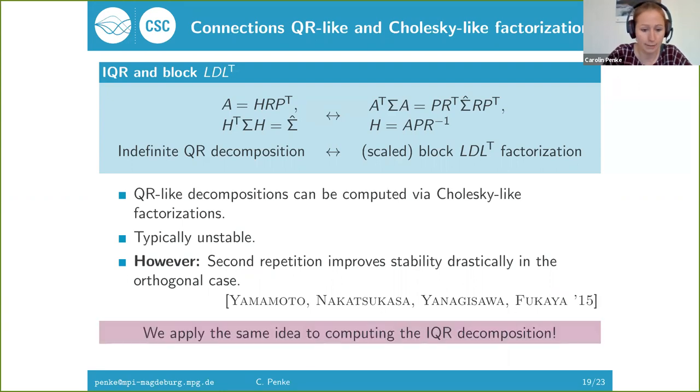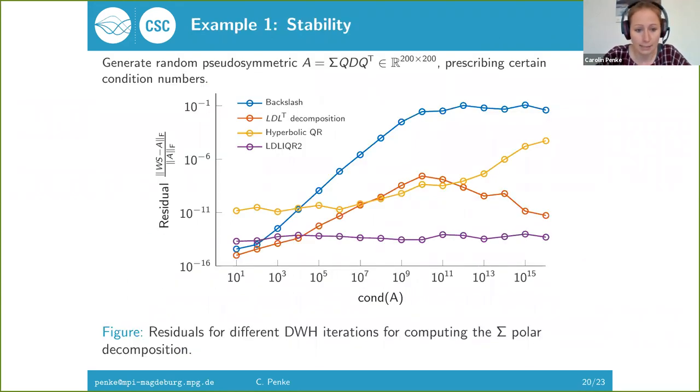This actually gives us quite good results. If we compute the indefinite QR decomposition in the iteration via a double LDLT decomposition, then we achieve a good residual even for very badly conditioned matrices.